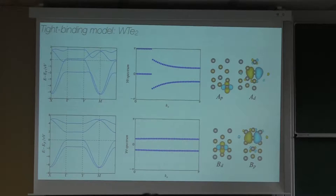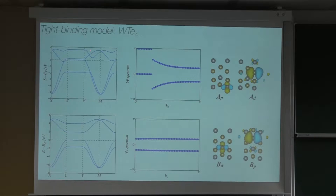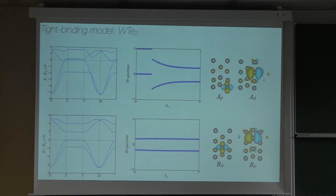To show how this works in practice, we built a tight-binding model of WTe₂. The basis functions make chemical sense: we have two sublattices A and B, some dx²-dy² type orbitals, and Pₓ orbitals at the tellurium sites — times two because we have two sublattices. This gives our tight-binding model of the non-trivial phase. If you do the Wilson loop spectrum — the eigenvalues of the Wilson loop going from gamma to X — you see that at first it is quantized to 0 and pi. But once we cross the crossing point, the eigenvalues just become complex conjugate again. This is a fingerprint and a topological characterization of this Dirac semimetal.